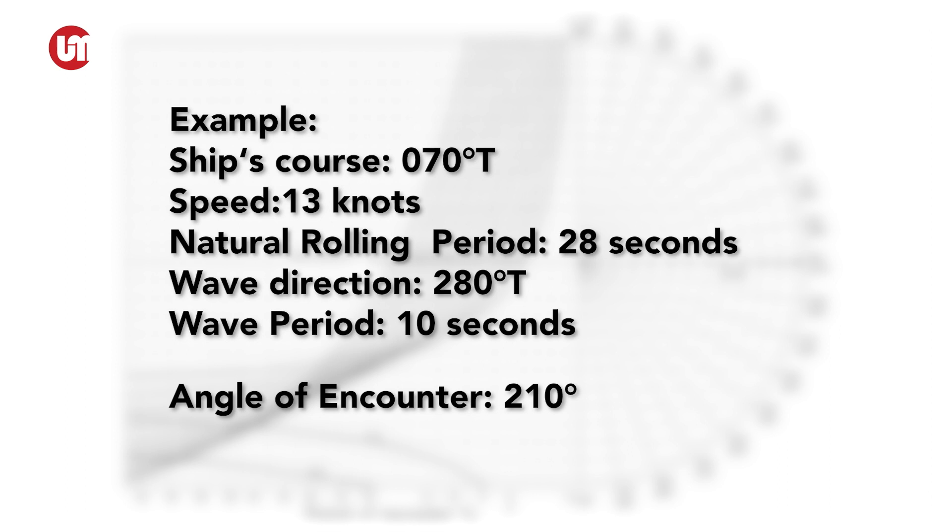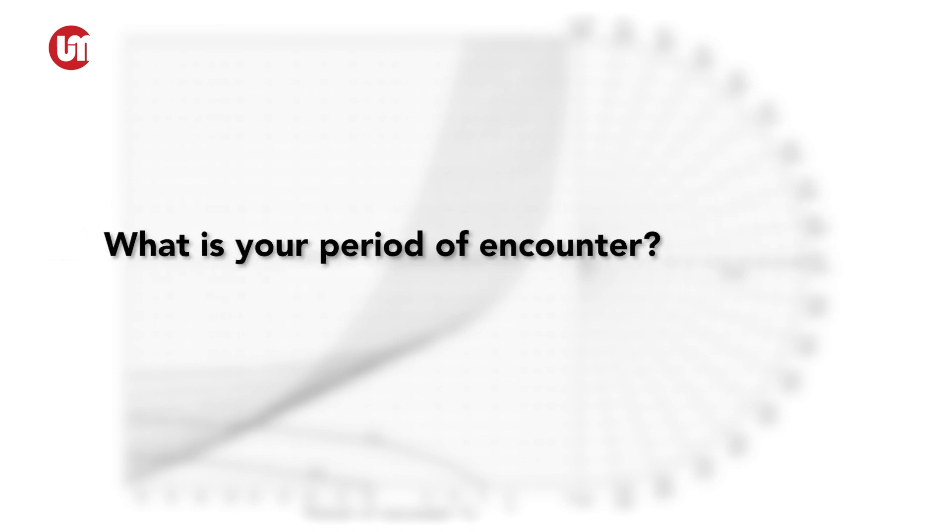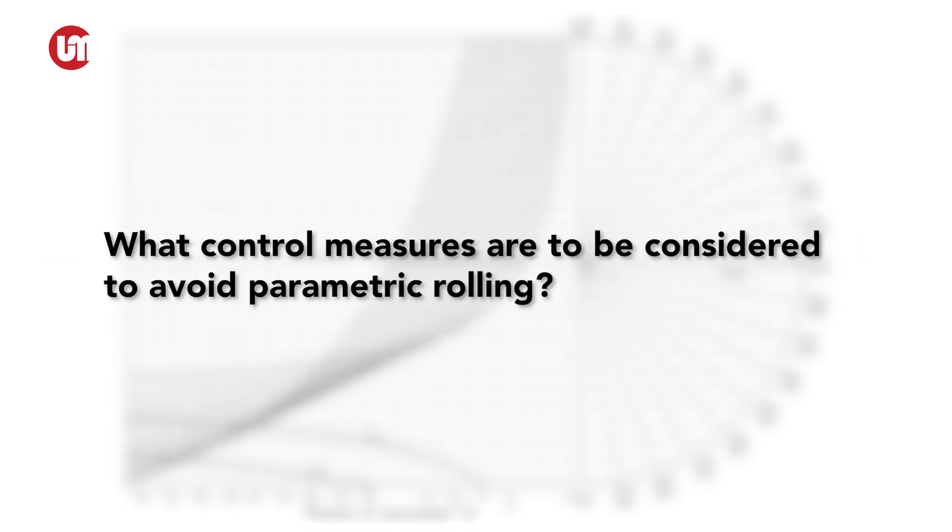Your ship's speed is 13 knots and wave period is observed at 10 seconds. Now the questions are: what are the limits of the danger zone to be avoided? What is your period of encounter for this condition? And what control measures are to be considered to avoid parametric rolling?